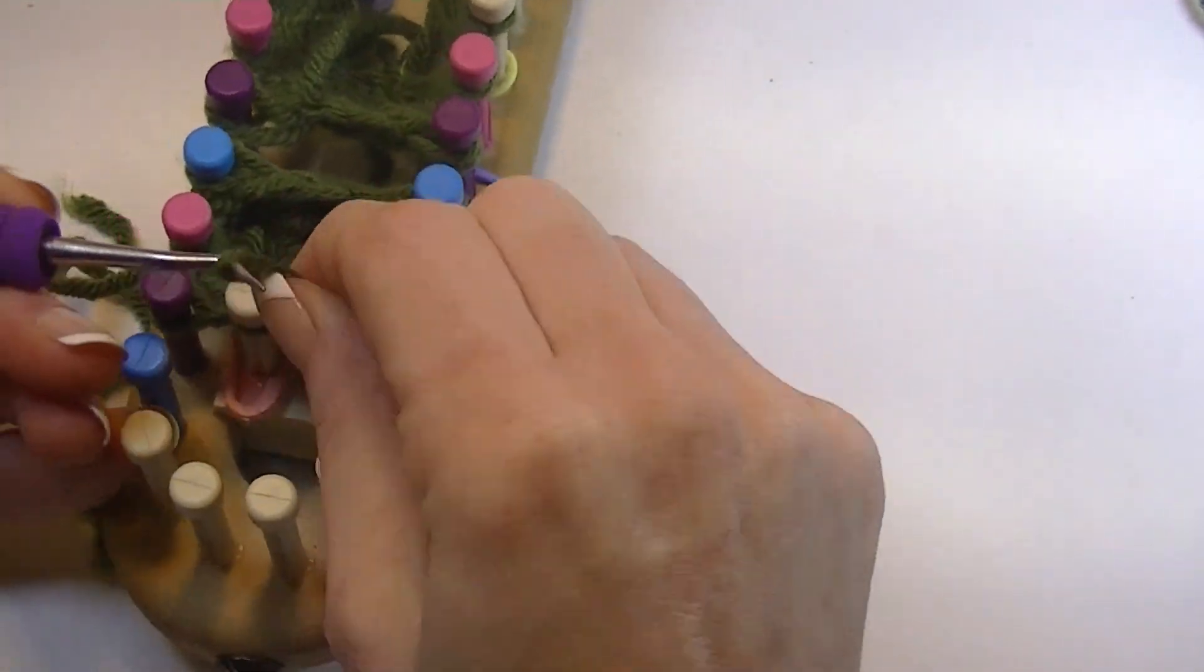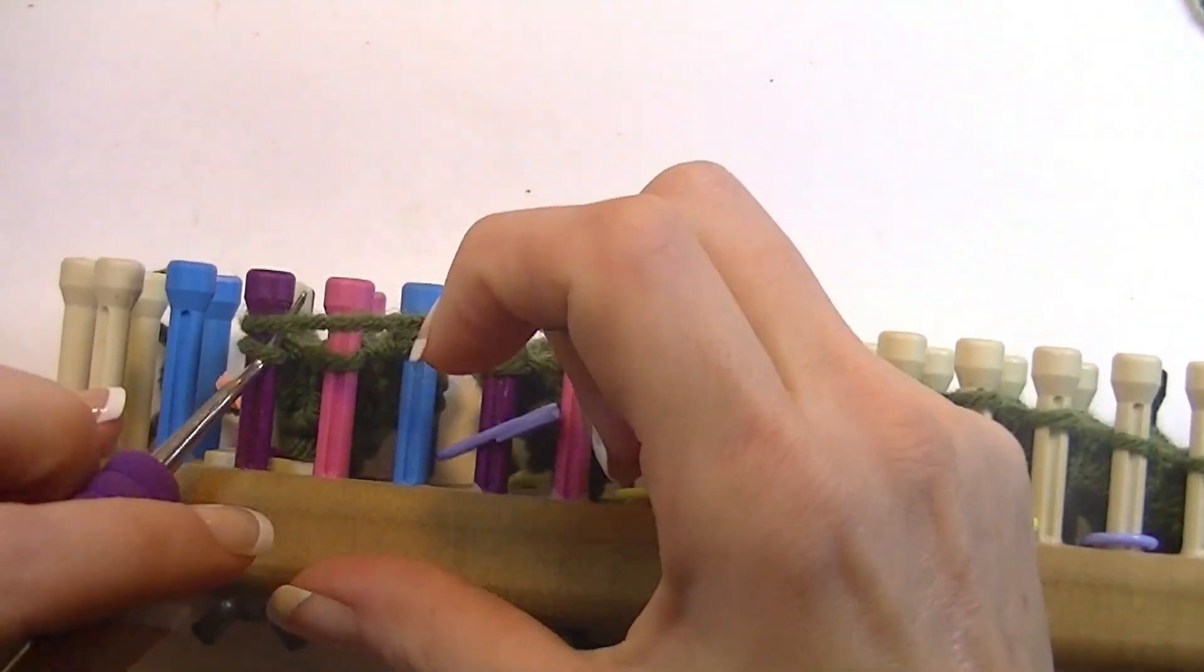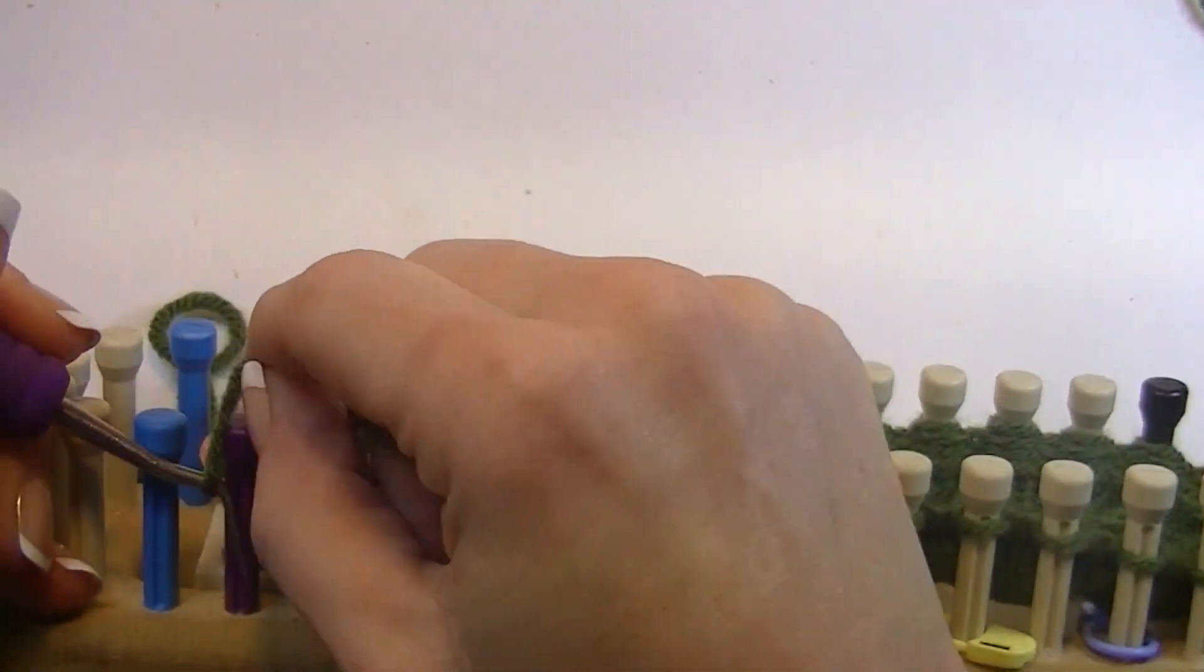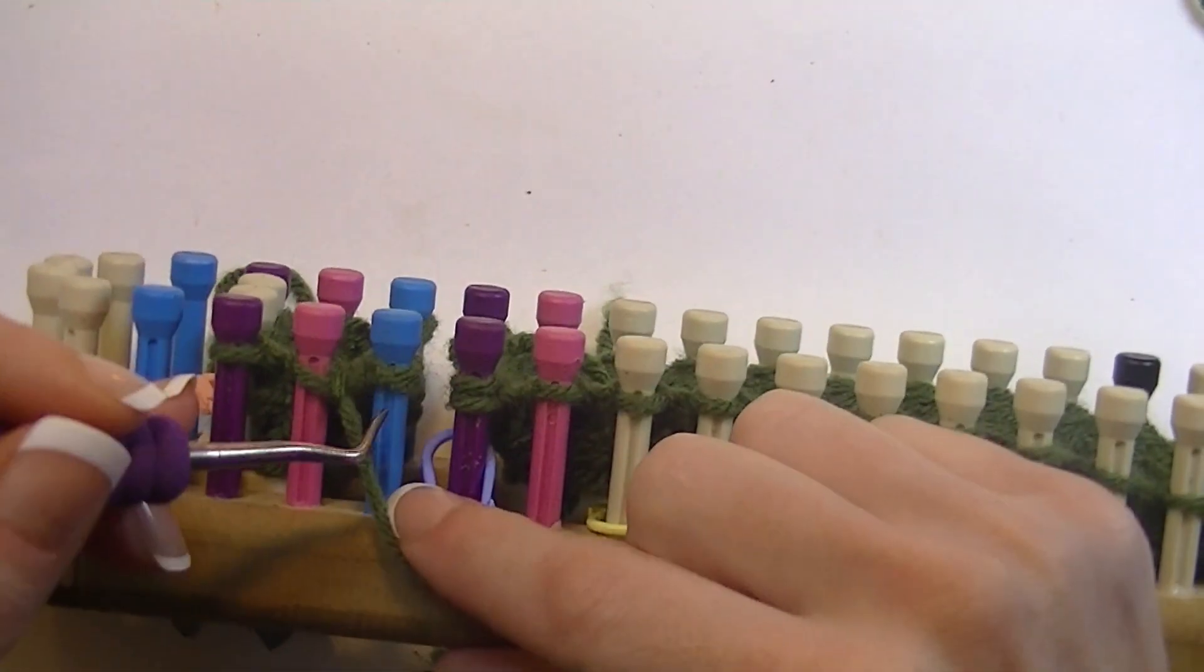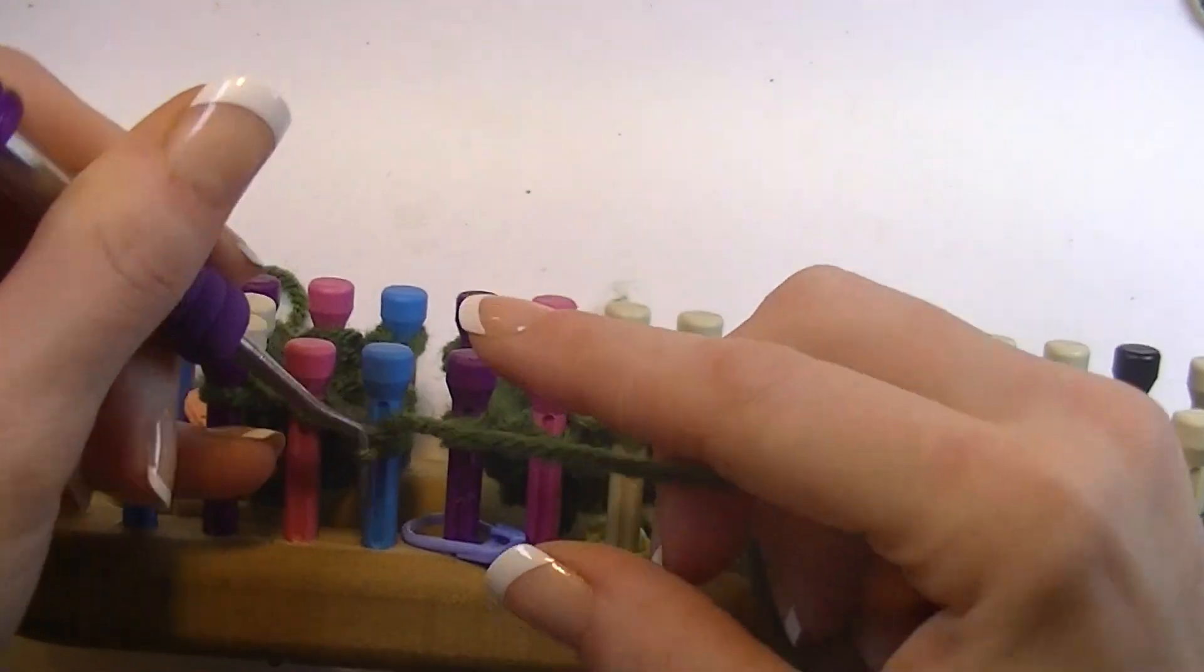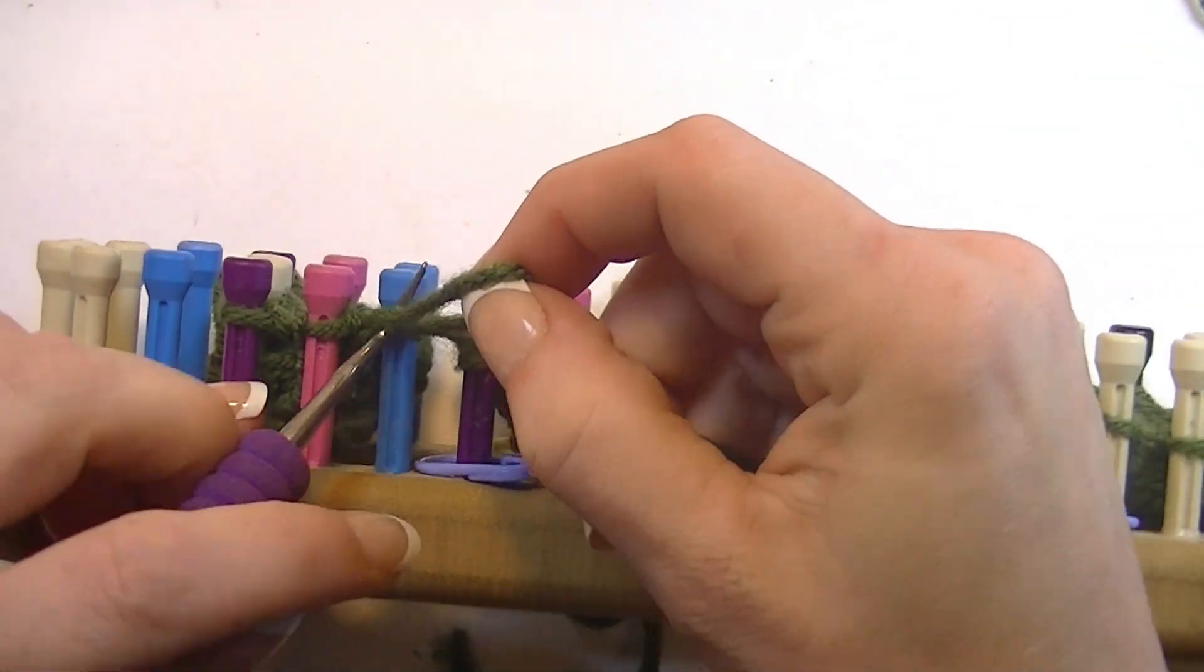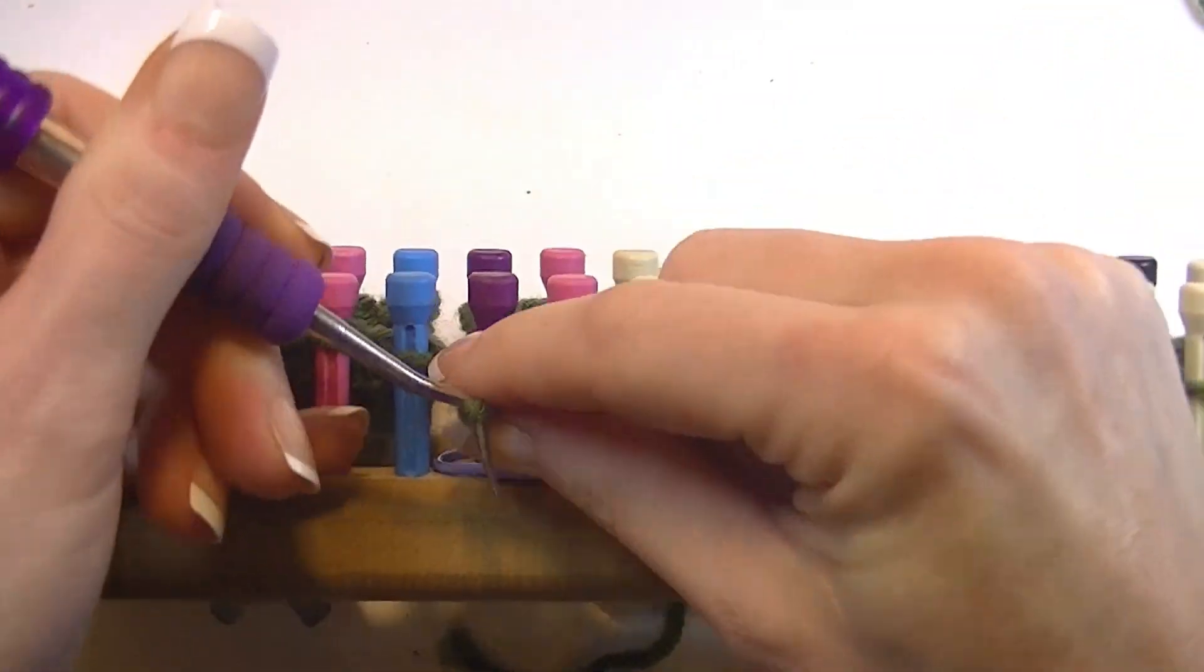When you get to the pegs with two stitches on them, treat both the stitches like one. You are working in the round.